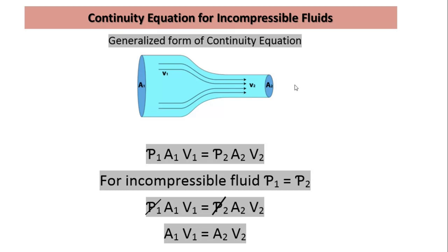But for incompressible fluid, rho 1 is equal to rho 2. That is, density doesn't change. So we can cancel rho 1 and rho 2 from either side and we get A1 V1 is equal to A2 V2, which is the continuity equation for incompressible fluids.